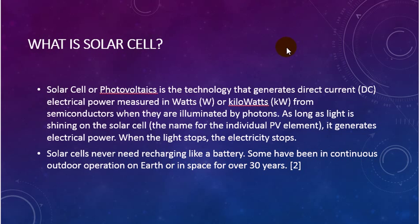Now we ask the question, what is the solar cell? It is a photovoltaic technology that generates direct current electrical power measured in watts or kilowatts from semiconductors when they are illuminated by photons. As long as light is shining on the solar cell, the name of the individual PV elements, it generates electrical power. When the light stops, the electricity stops. Solar cells never need recharging like a battery. Some have been in continuous outdoor operation on Earth or in space for over 30 years.